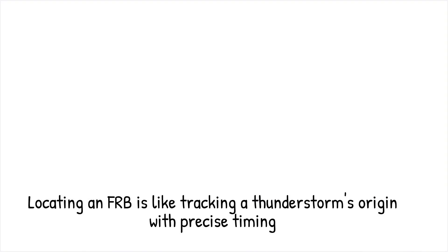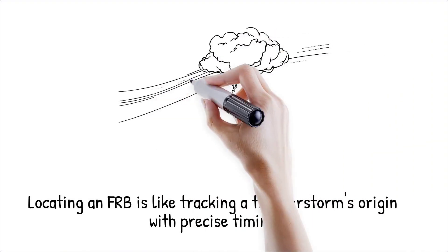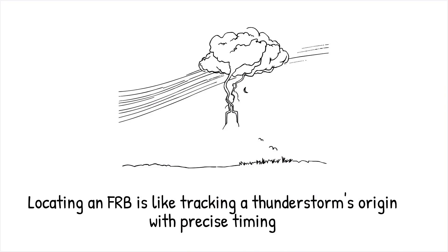Locating an FRB is like tracking a thunderstorm by listening to how long it takes for the sound to reach different observers, allowing scientists to determine its origin with precision.